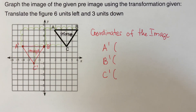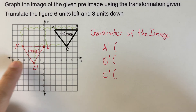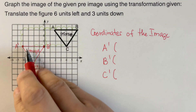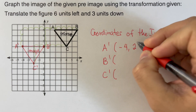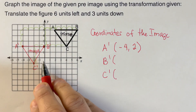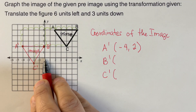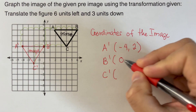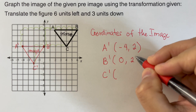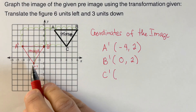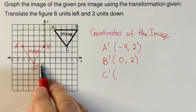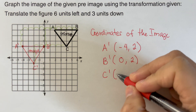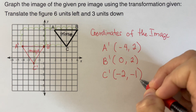Starting off with A prime, that would be negative four and two. Our B prime is on zero and positive two. And our C prime is on negative two, negative one.